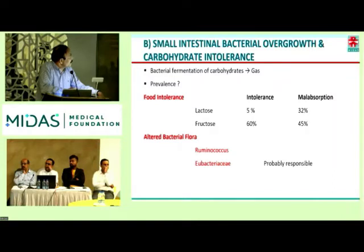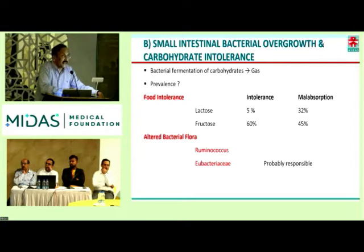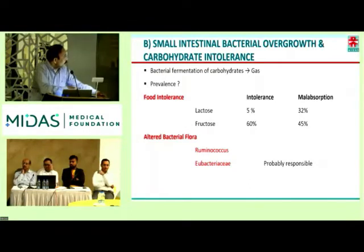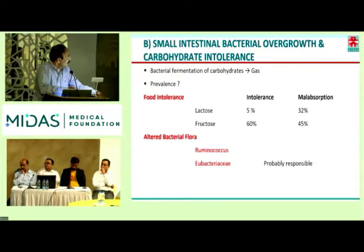The prevalence of food intolerance has been seen to a large extent, with lactose and fructose — especially disaccharides or unabsorbed sugars — being important. There was one study which showed that patients with IBS who did not have bloating had a less number of ruminococcus and eubacteria. So probably these are the two organisms responsible for bloating in these patients.